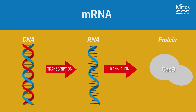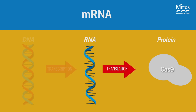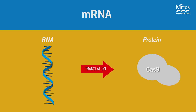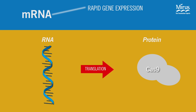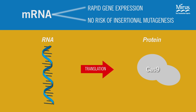Transfection of Cas9 mRNA is another option for researchers whose experiments are not amenable to DNA delivery. mRNA transfection eliminates the incubation time required for cells to transcribe DNA into RNA. In addition to rapid gene expression, a benefit to RNA transfection is that there is no risk of insertional mutagenesis, because there is no exogenous DNA introduced to the cell.